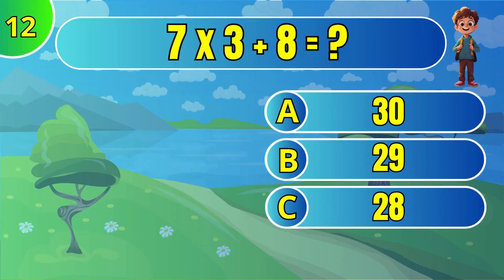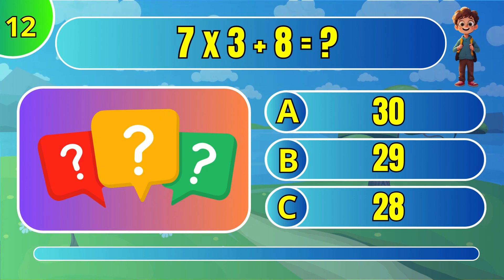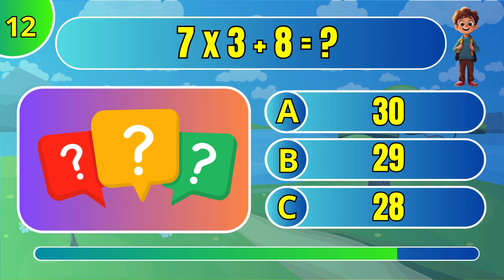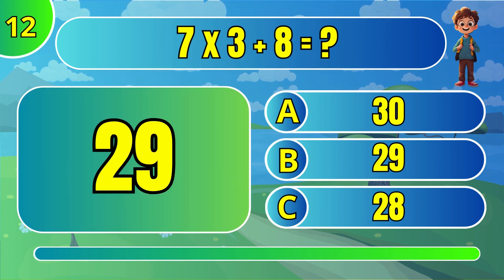What is 7 times 3 plus 8? The answer is B: 29.